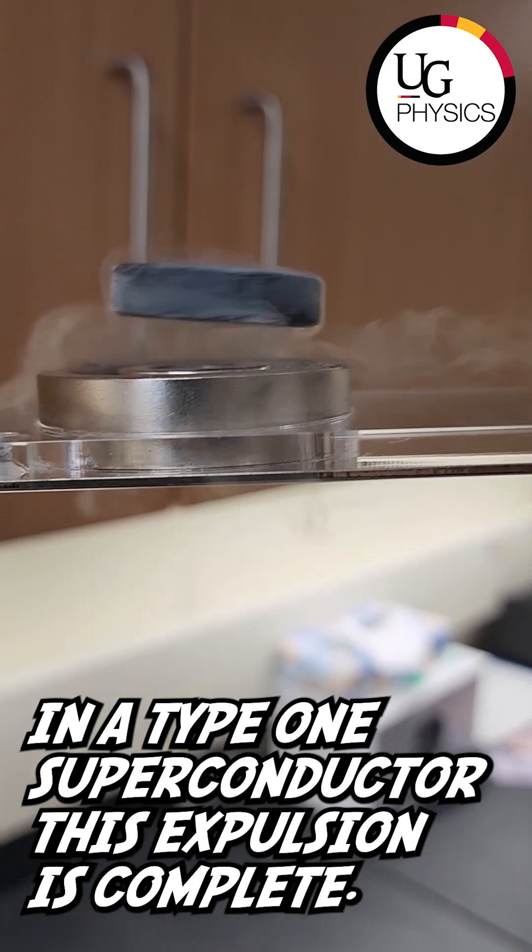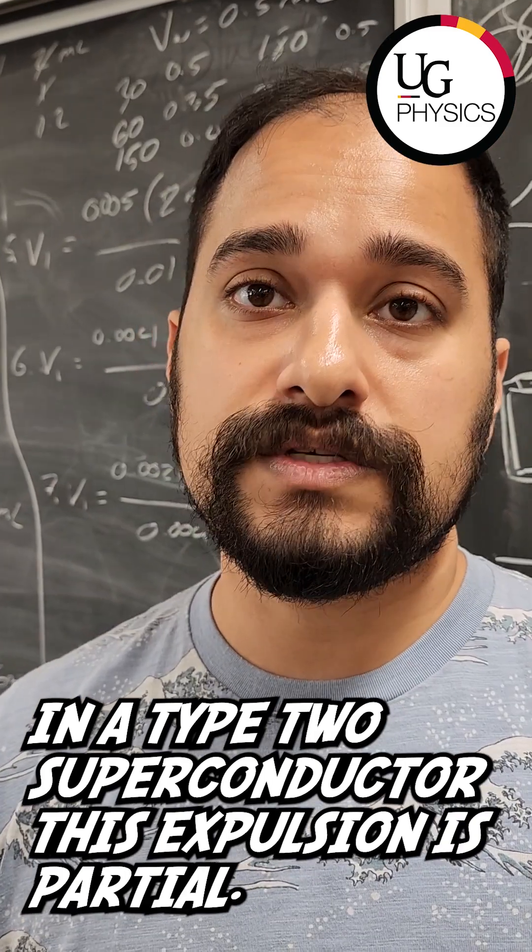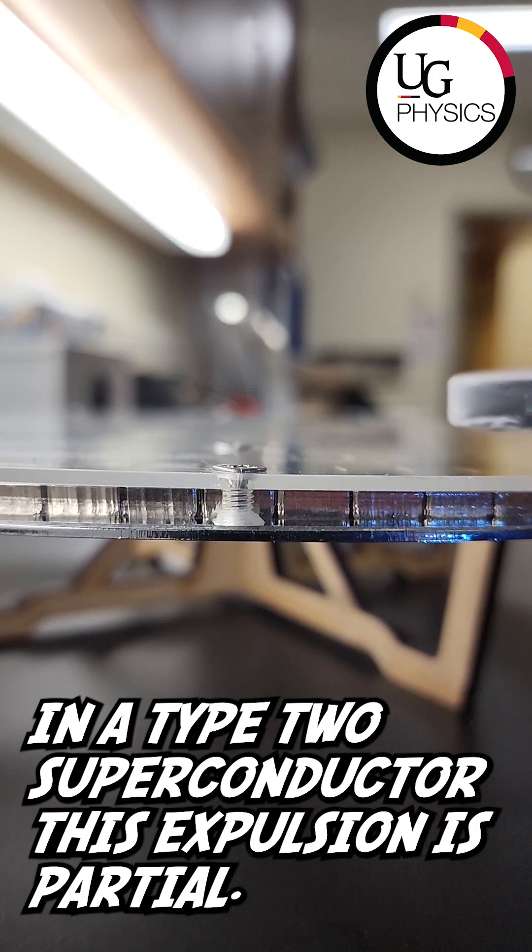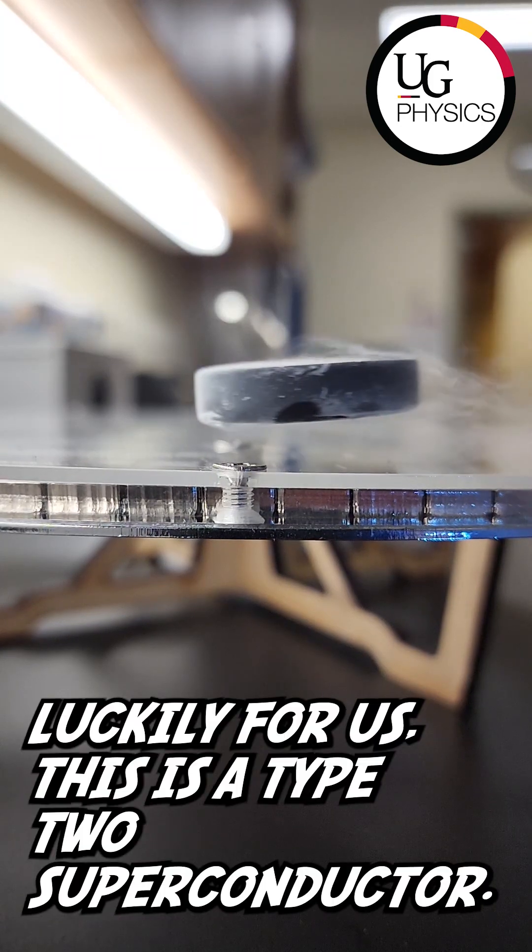In a type 1 superconductor, this expulsion is complete. In a type 2 superconductor, this expulsion is partial. Luckily for us, this is a type 2 superconductor.